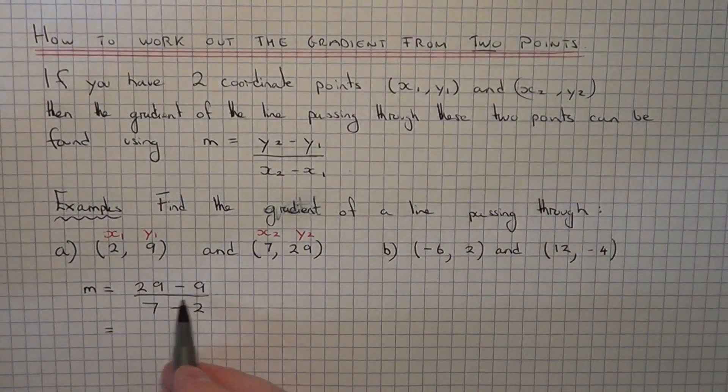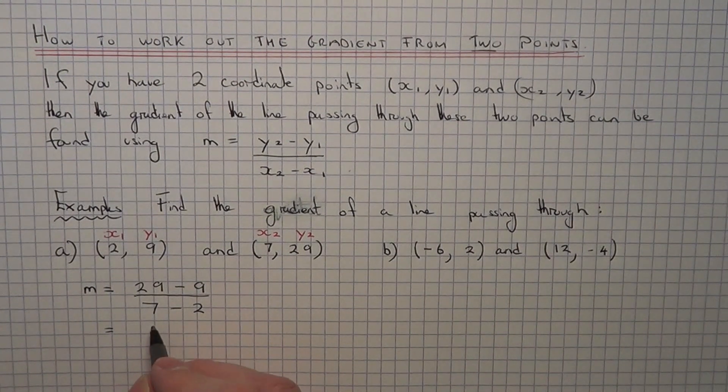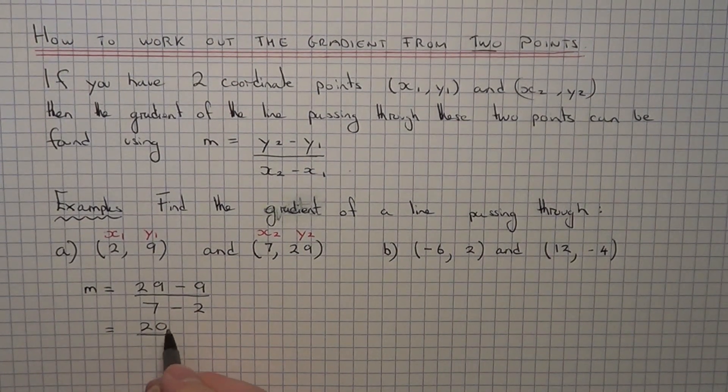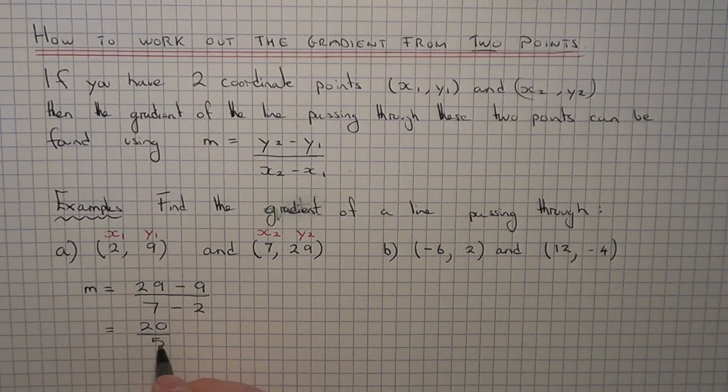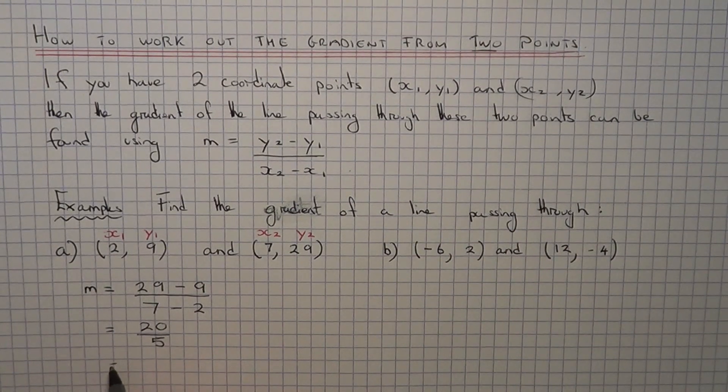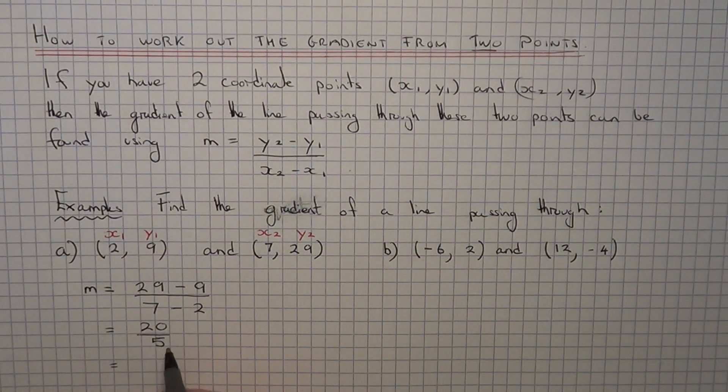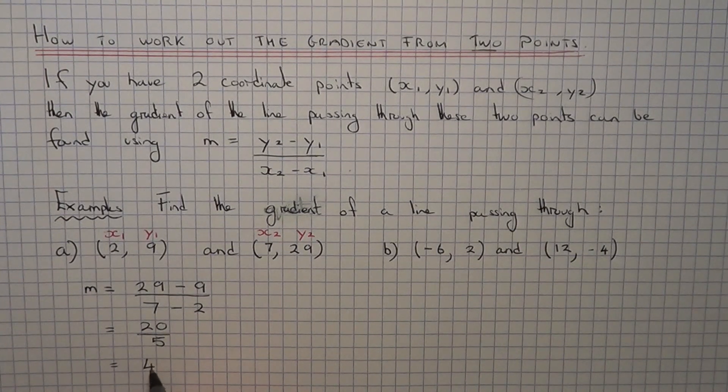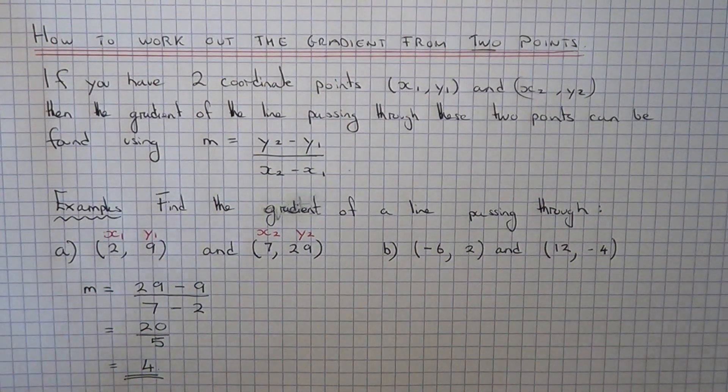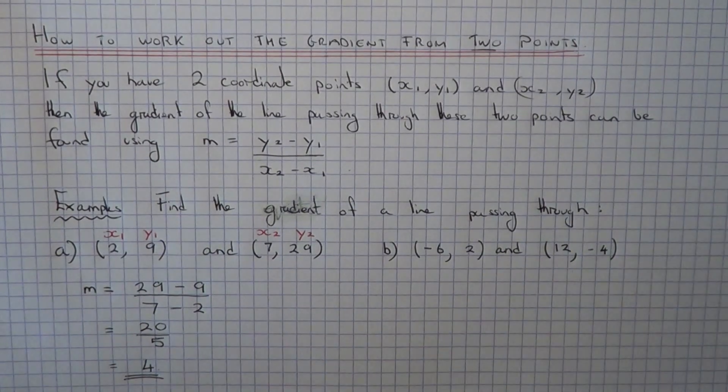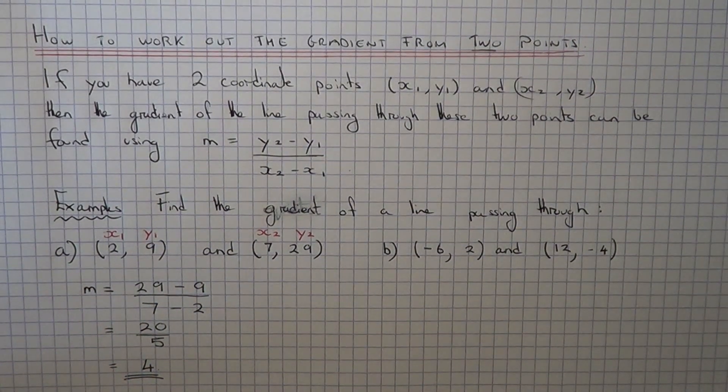So if we work out the numerator, 29 take away 9 is 20, and 7 take away 2 is 5. And if we just work this one out, 20 divided by 5 is 4. We don't have to do anything with that answer, so that is the exact value for the gradient.